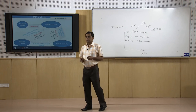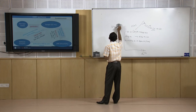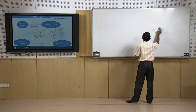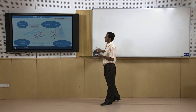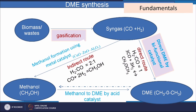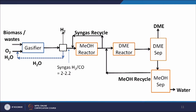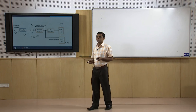Now we move to DME. Dimethyl ether can be produced either by methanol dehydration using a catalyst, or directly from syngas in a single step using bi-metallic or bi-functional catalyst. In the first case, H₂ to CO ratio is 2:1 for methanol synthesis followed by dehydration; in the second case, H₂ to CO ratio should be 1. In the flow diagram: syngas → methanol → DME conversion. Since conversion is not complete, DME is separated, and the remaining methanol is separated from water and recycled.